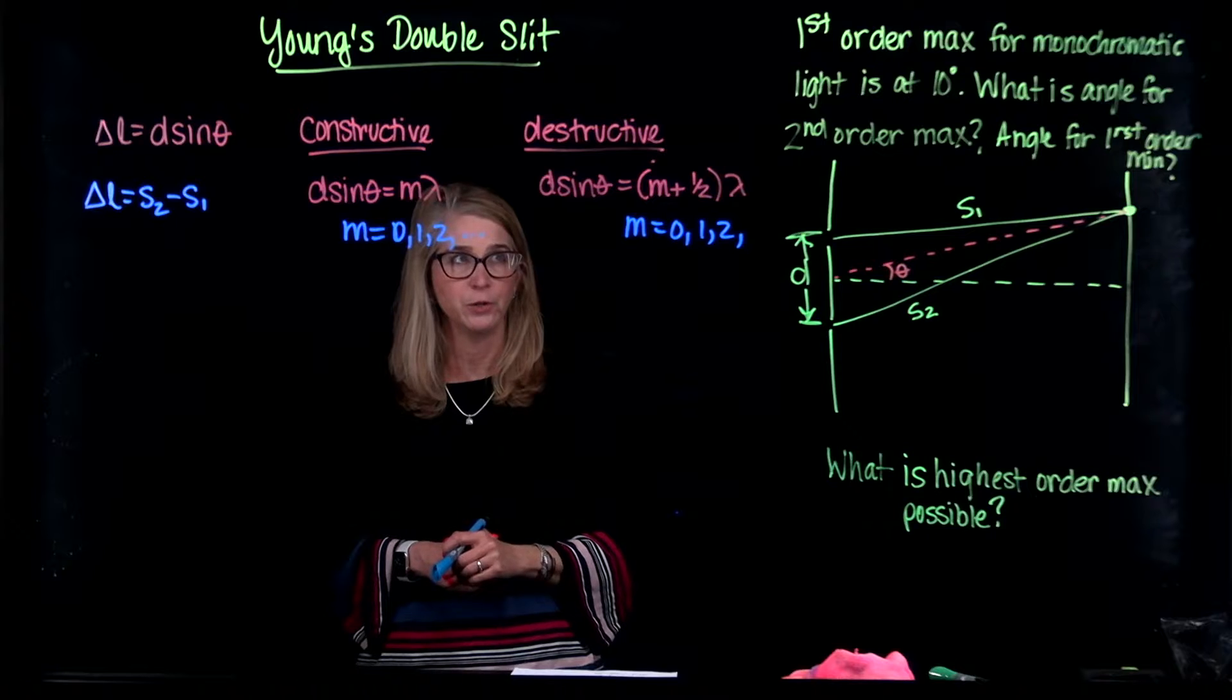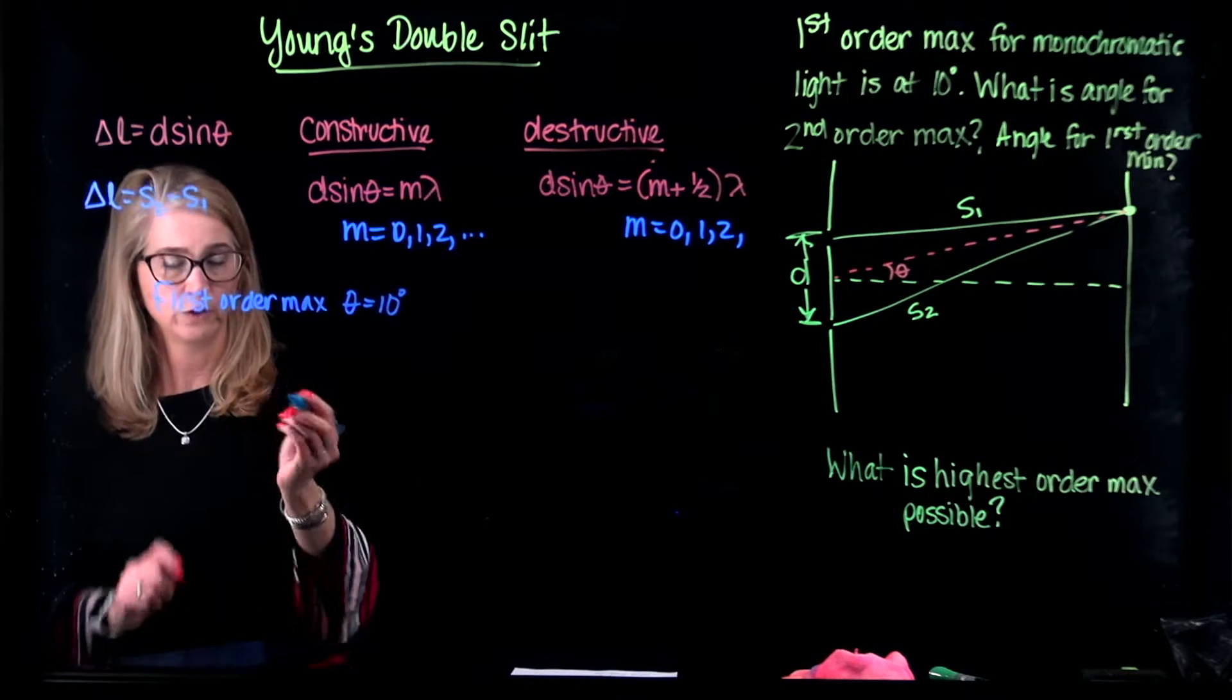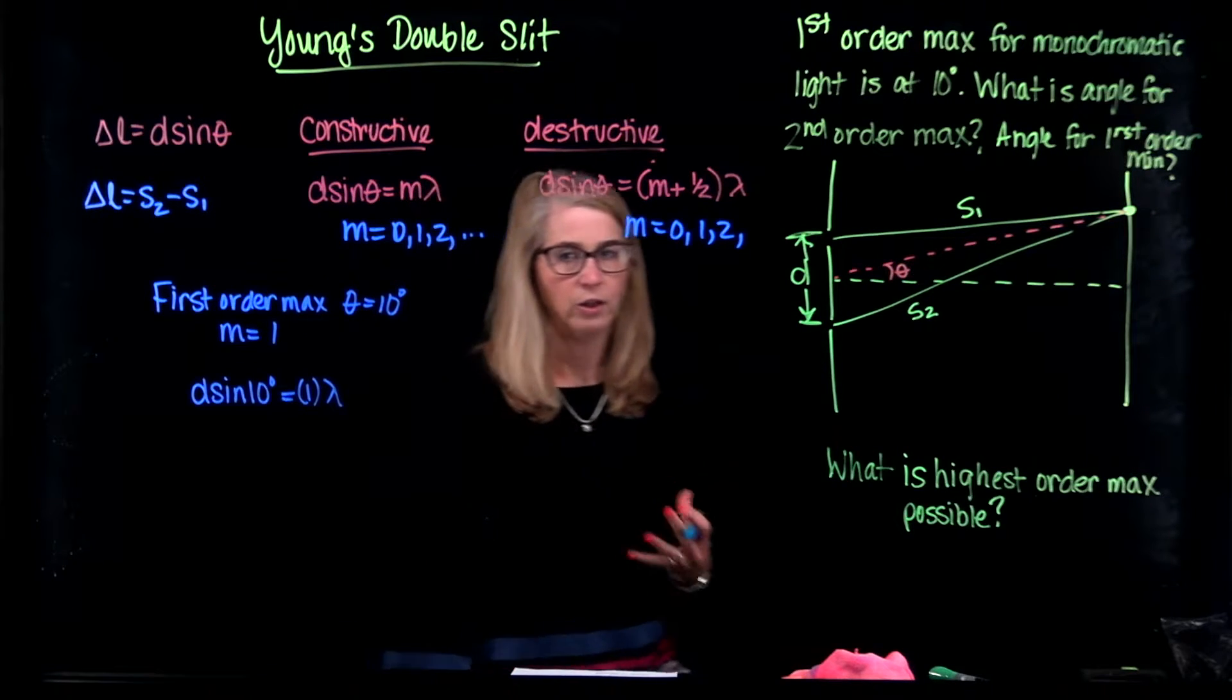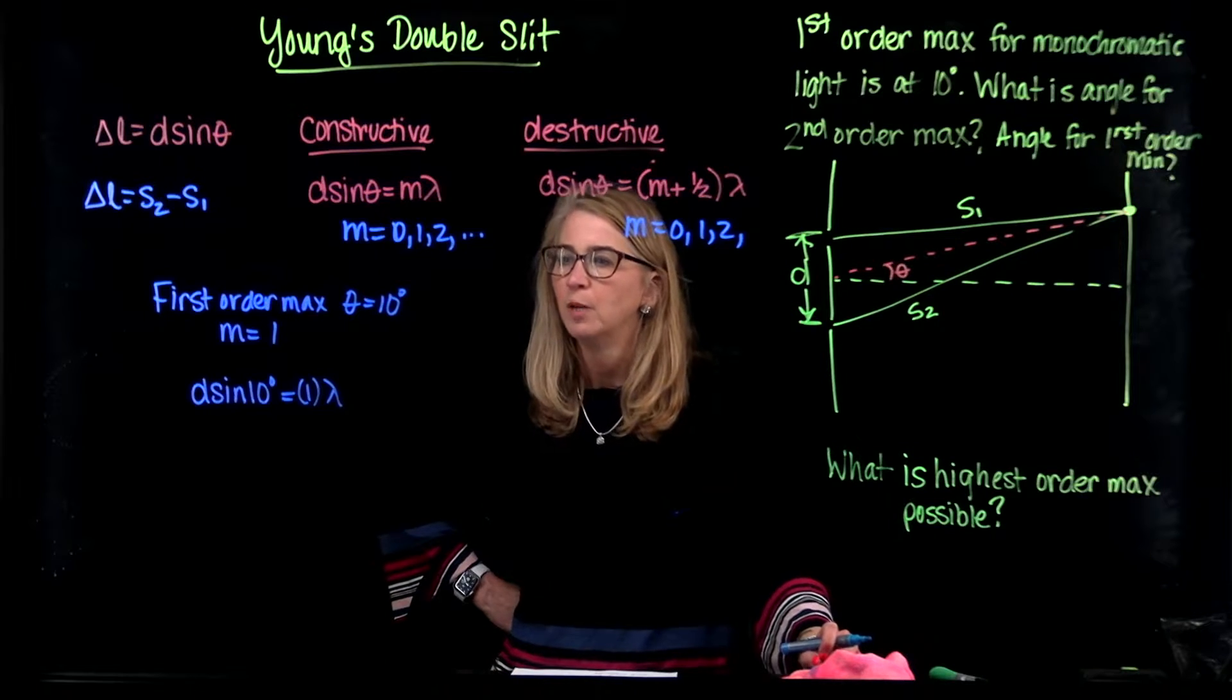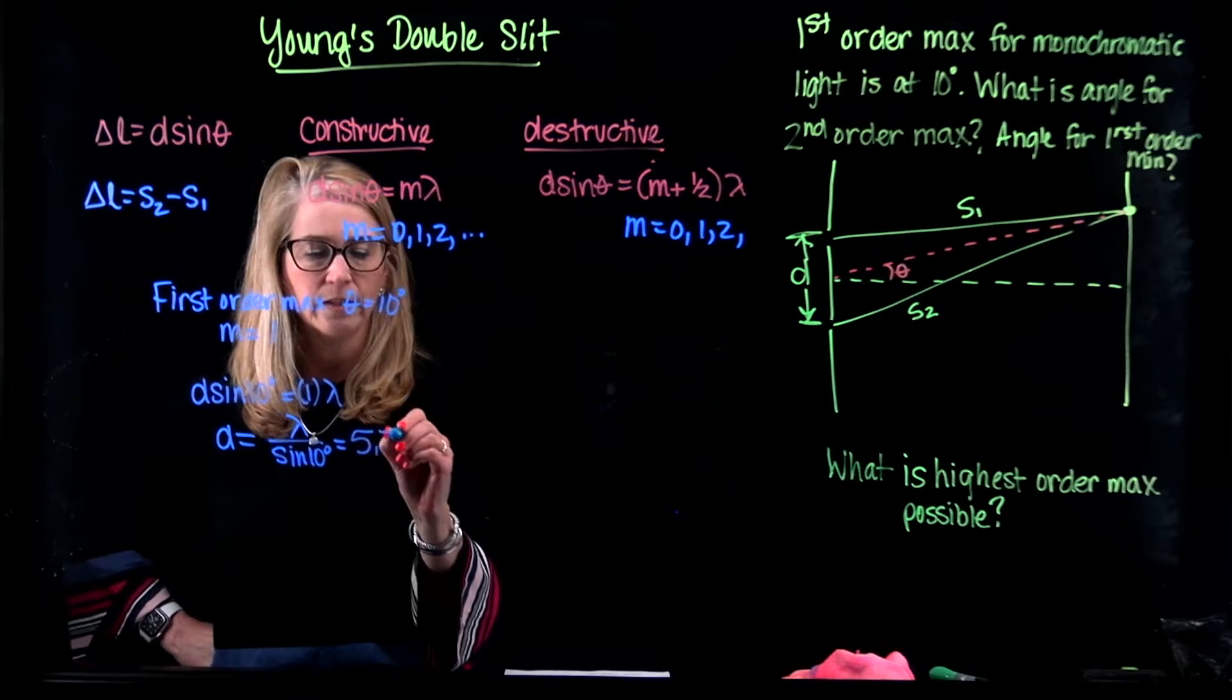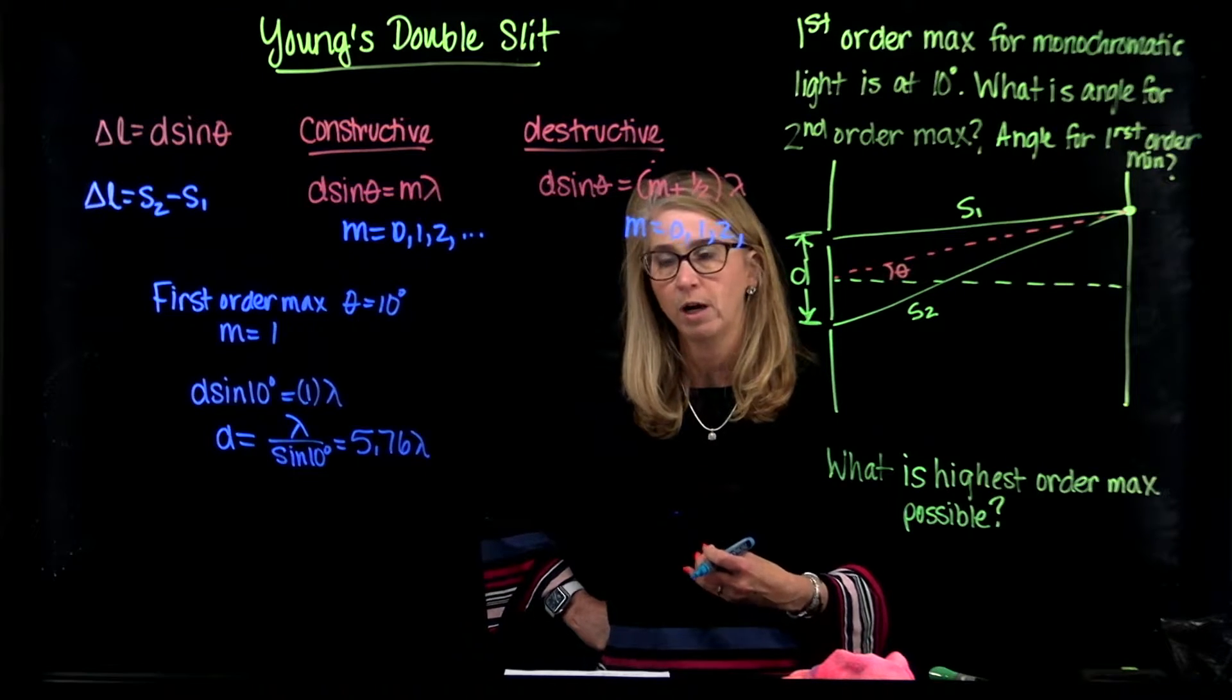Alright, so those are the basic things that we're going to use. Now we're told for the first order max, all that we know is theta is 10 degrees. So first order max means M is equal to 1. So we know that D sine of 10 degrees is equal to 1 times the wavelength. Now as I look at this, I might feel like I don't have enough information. I don't know what the wavelength of this light is and I don't know what the D is. But I noticed that I could actually write D in terms of the wavelength. D is equal to wavelength over the sine of 10 degrees and that ends up to be 5.76 wavelengths. And that will be good enough for me because now I know how to relate D to the wavelength and then I only have the wavelength as an unknown in my problem and I think I'll be okay.